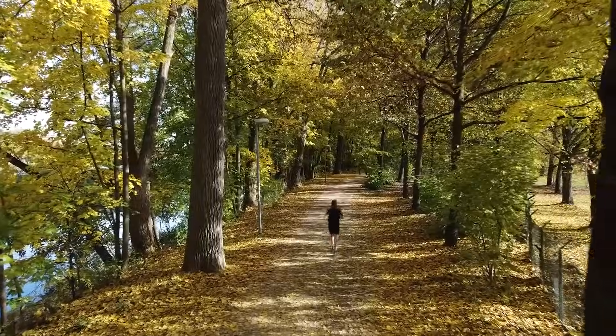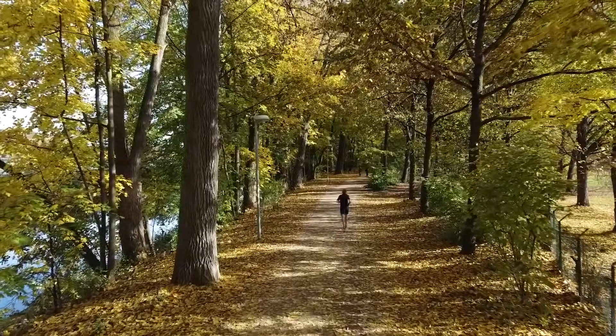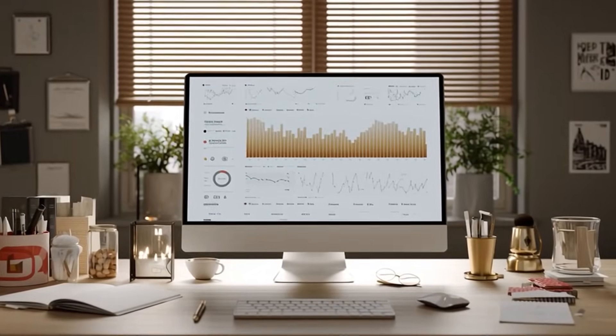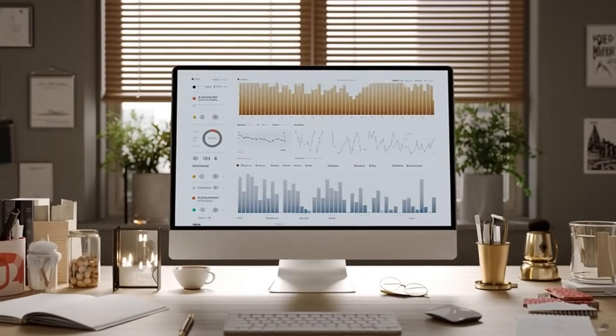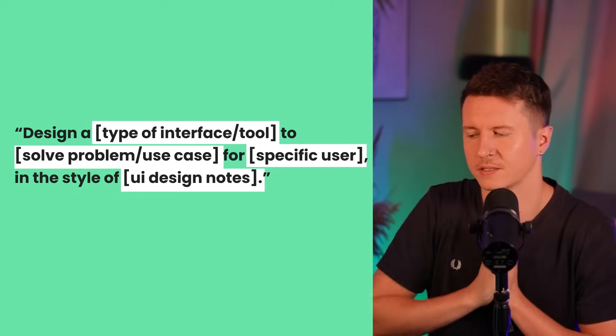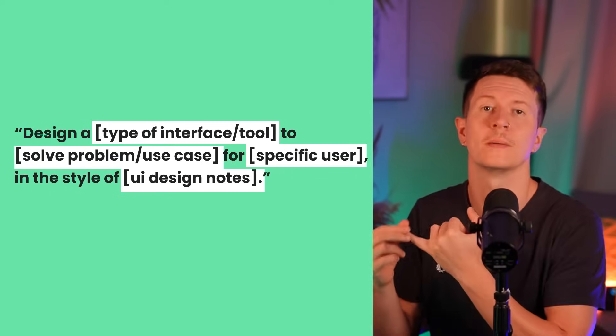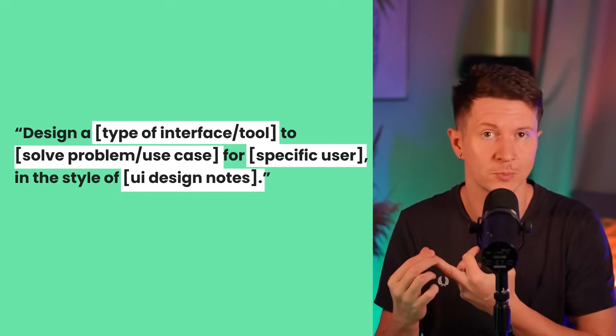There's a whole host of things you might want to put into your own dashboard. Perhaps you're tracking your fitness goals, updating what you're eating every day, or tracking your weight. Or maybe you're looking to track your business and keep an eye on different revenue metrics. When vibe coding, it's useful to think about your prompt as a formula. It goes: Design A, and then you put in the type of interface or tool you're looking to create — a website, an app, or a dashboard.